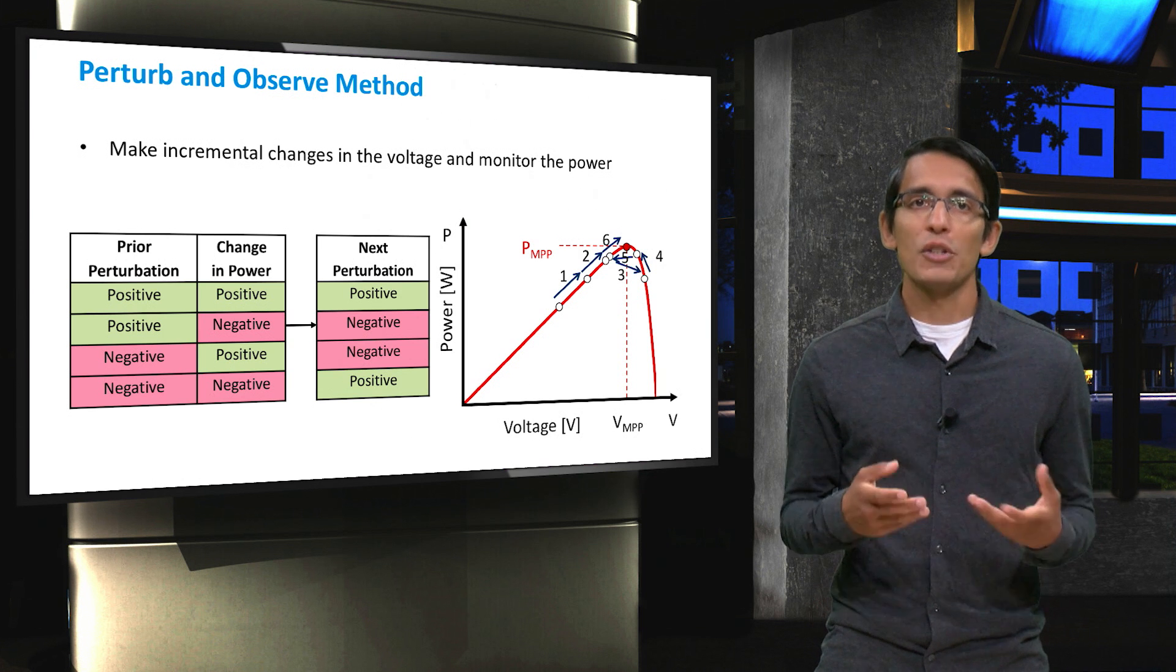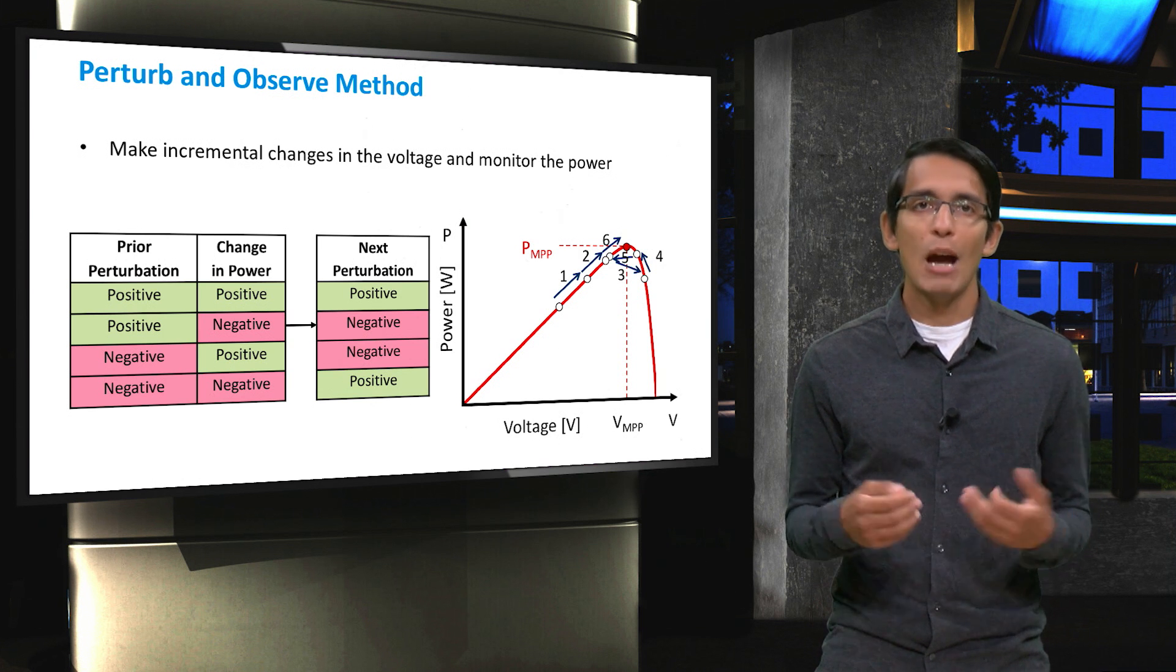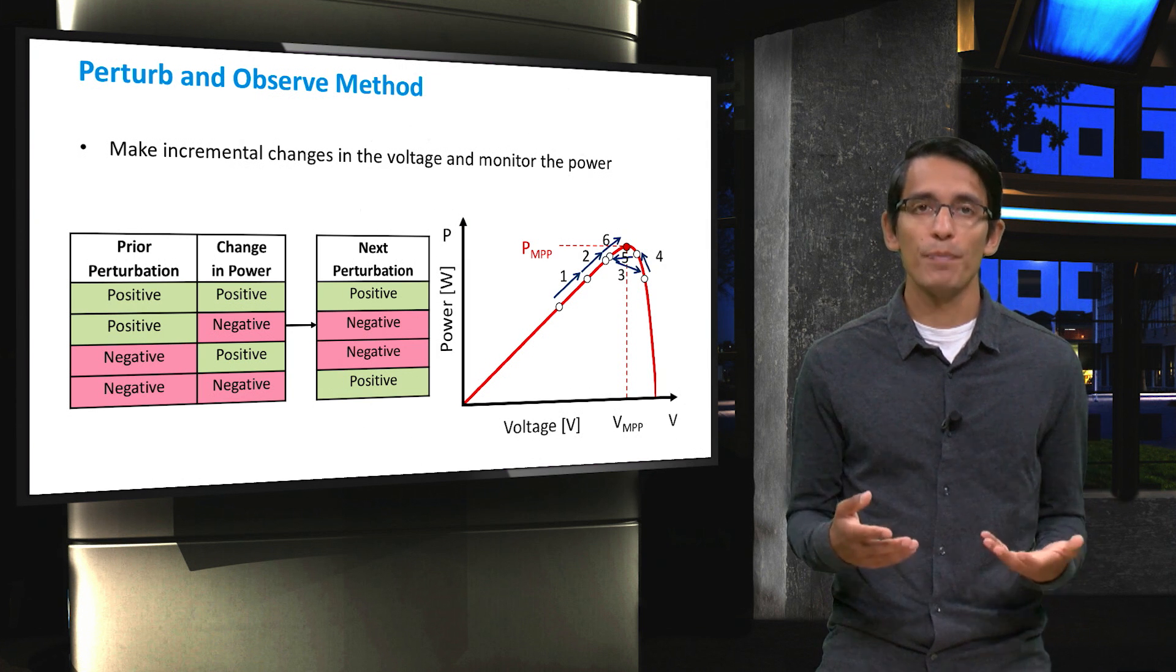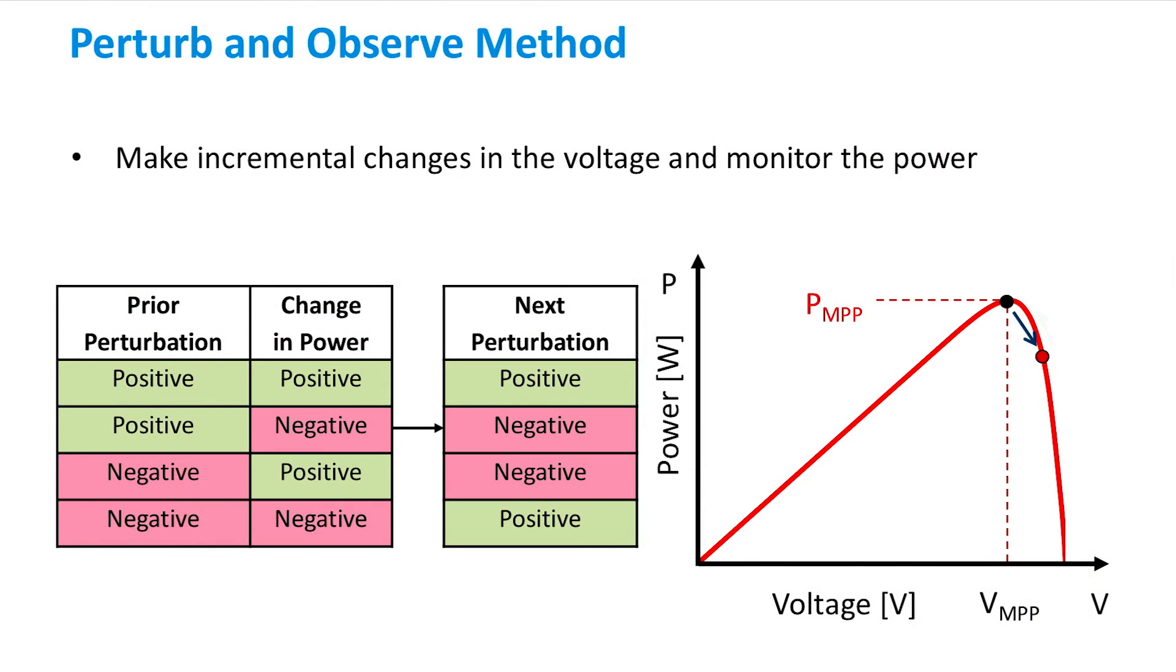Now you can see that we actually reached the maximum power point. However, the system doesn't really know that we have reached the maximum power point, so it will continue to make moves. You can imagine the result will look something like this. The system will constantly make perturbations moving around the power point.